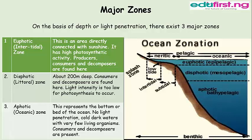The euphotic zone, otherwise called the intertidal zone, is an area directly connected with sunshine. It has high photosynthetic activity; producers, consumers, and decomposers are found here. In the dysphotic zone, light intensity is too low for photosynthesis to occur. The aphotic or oceanic zone represents the bottom or bed of the ocean — no light penetration, cold and dark waters with very few living organisms; only consumers and decomposers are present. The various zones are shown in the diagram.